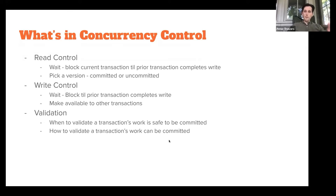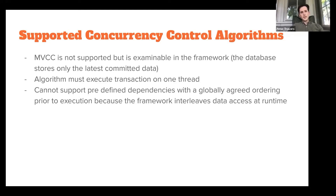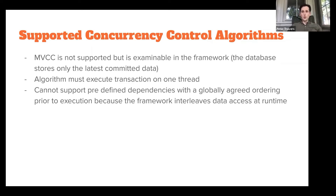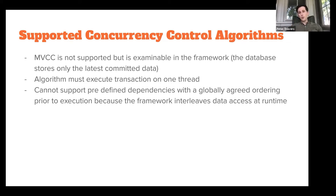For write control, we block until a prior transaction completes a write, and whether or not we make written data available to subsequent reads — allowing subsequent reads to read our uncommitted data. Additionally, how and when to validate. The database Polyjuice doesn't actually support all types of concurrency control and doesn't support MVCC — multi-version concurrency control. Technically it's expressible in their framework, but their database couldn't support it because they didn't maintain multiple versions of data.